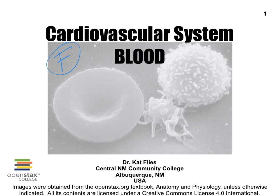Hi, this is Dr. Kat Fisigan from Central New Mexico Community College, continuing our discussion on the blood. In video E, we discussed hemostasis, where we learned how after an injury, our blood stops flowing due to the process of hemostasis. But now we need to take a look at what needs to happen in order to get rid of the clot that was formed during the third phase of hemostasis, namely coagulation.